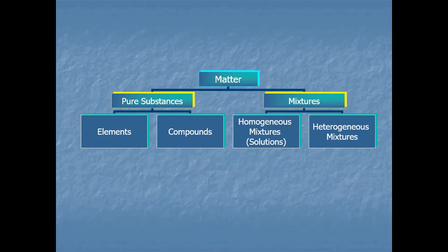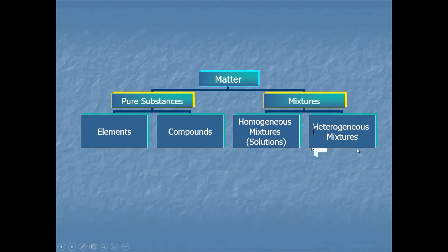Heterogeneous mixtures are ones that will separate from each other. For example, if you mix sand and water or oil and water and let them sit, they will eventually separate — sand drops to the bottom, and oil and water form separate layers. Those are examples of heterogeneous mixtures. Get all of these categories organized in your head and understand how they fit together.